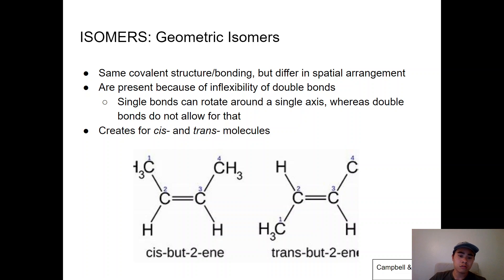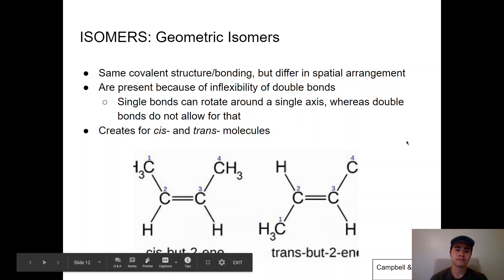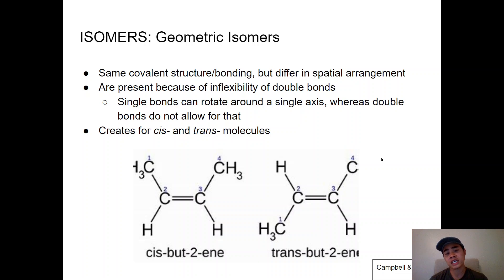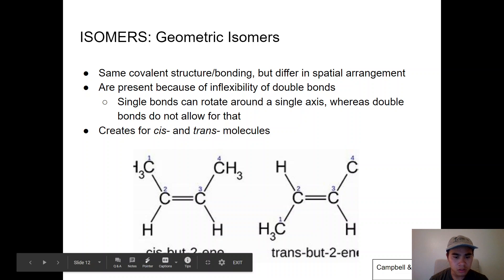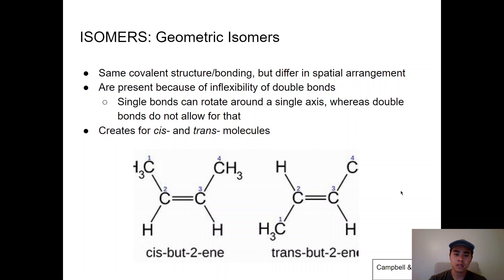A single bond can rotate freely, but a double bond stays stiff. When you try to twist a double bond, it won't work. Looking at the second and third carbons, they don't rotate — they stay the same. What changes is the rotation of the first carbon. This creates cis and trans molecules — two ways of describing geometric isomers. Cis-butene and trans-butene are the example here. Trans refers to the group being on the opposite side, so the number-one carbon is on one side in cis and the other side in trans.